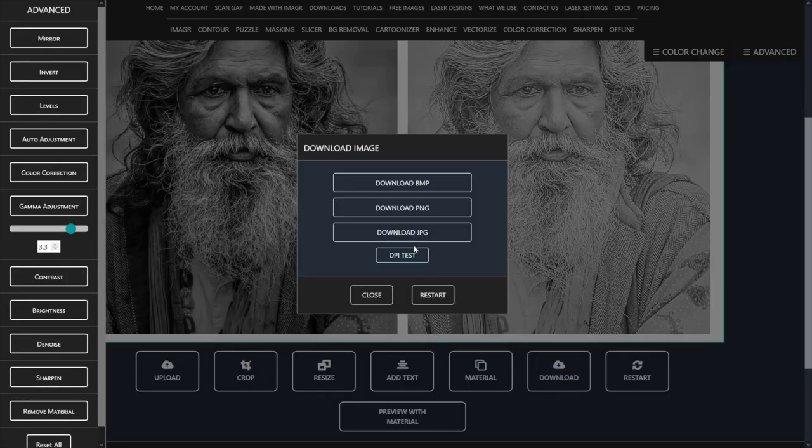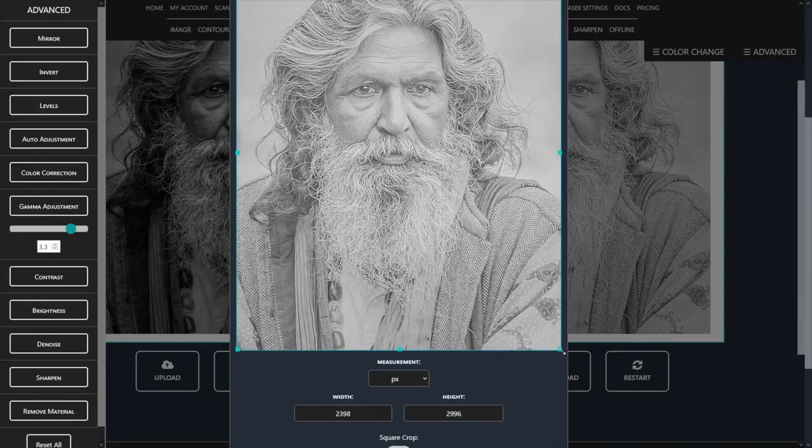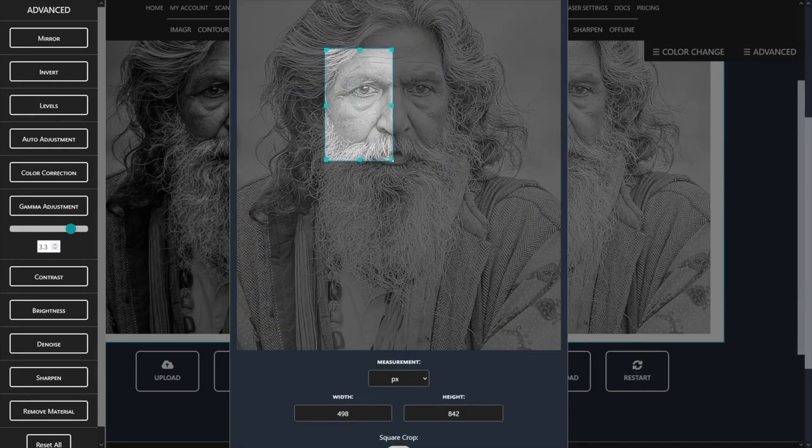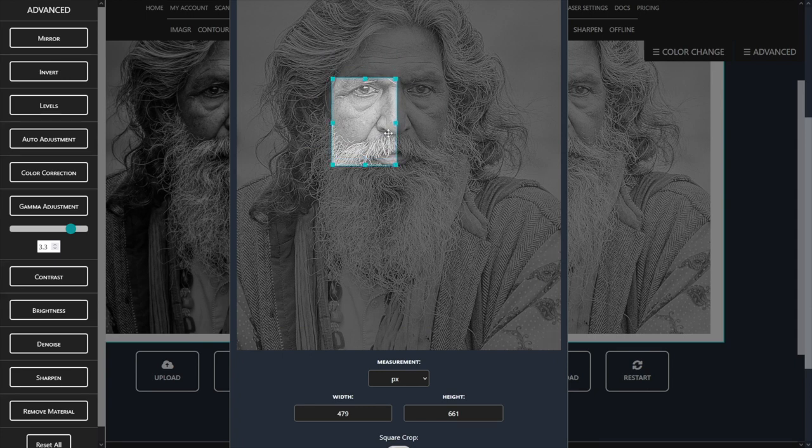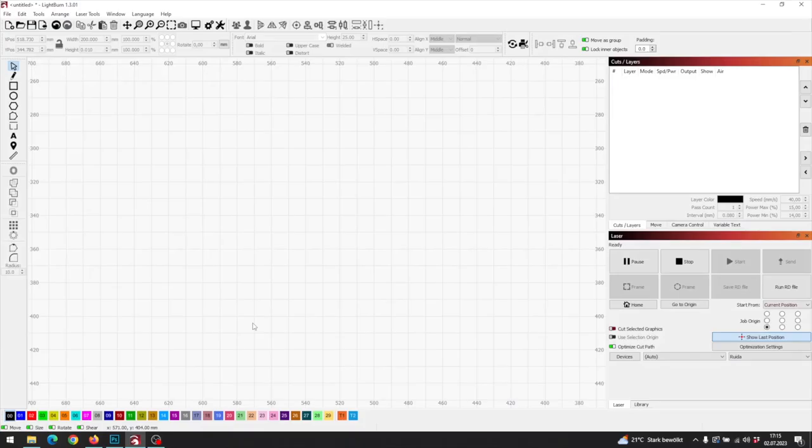Save the image as PNG and then click on DPI test. Choose a small area with a lot of details and tick the DPI values you want to test. It will download a zip file. Extract it and import it into LightBurn.